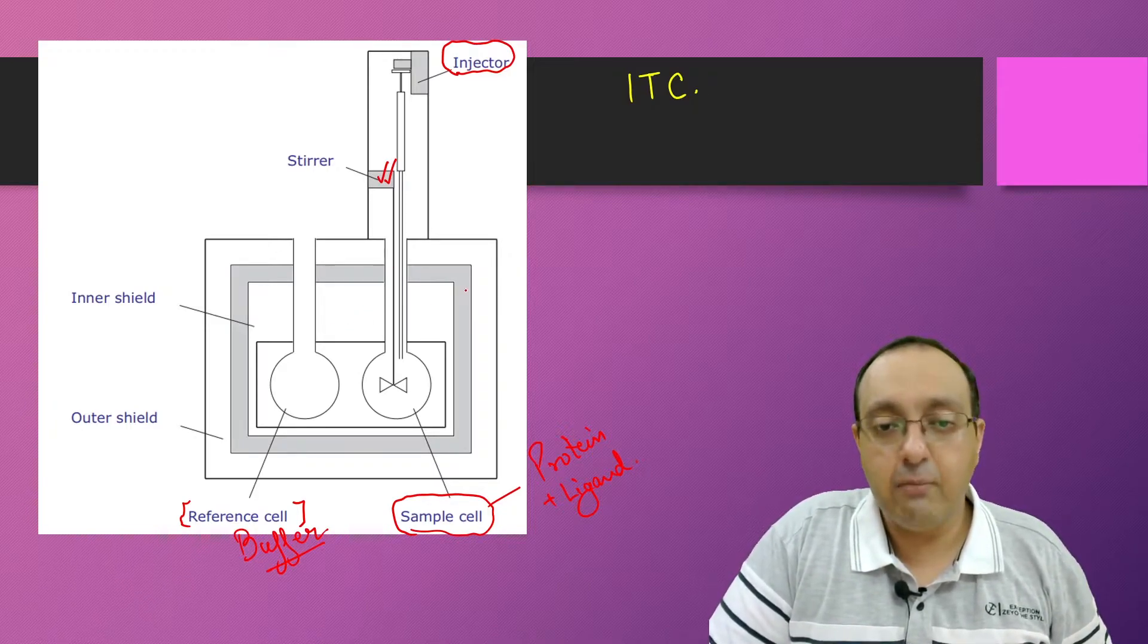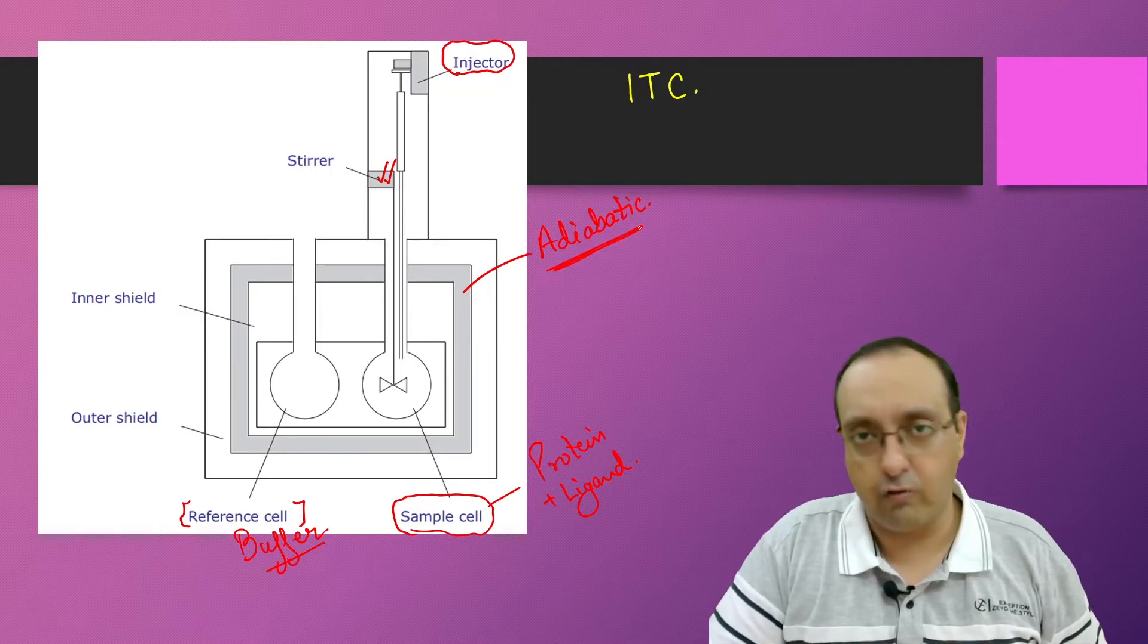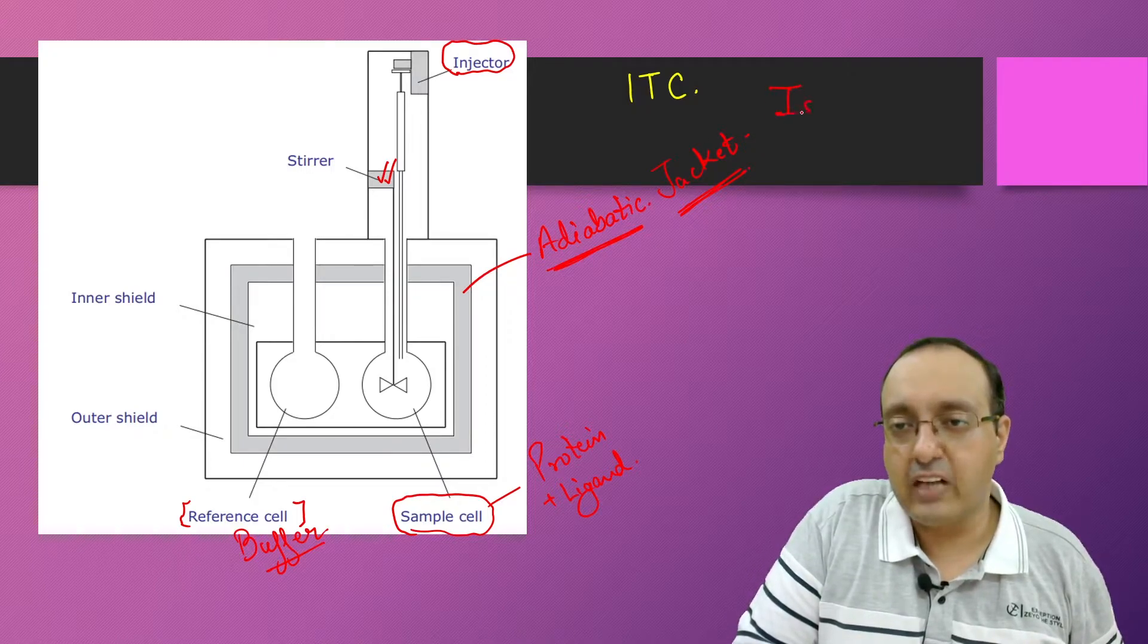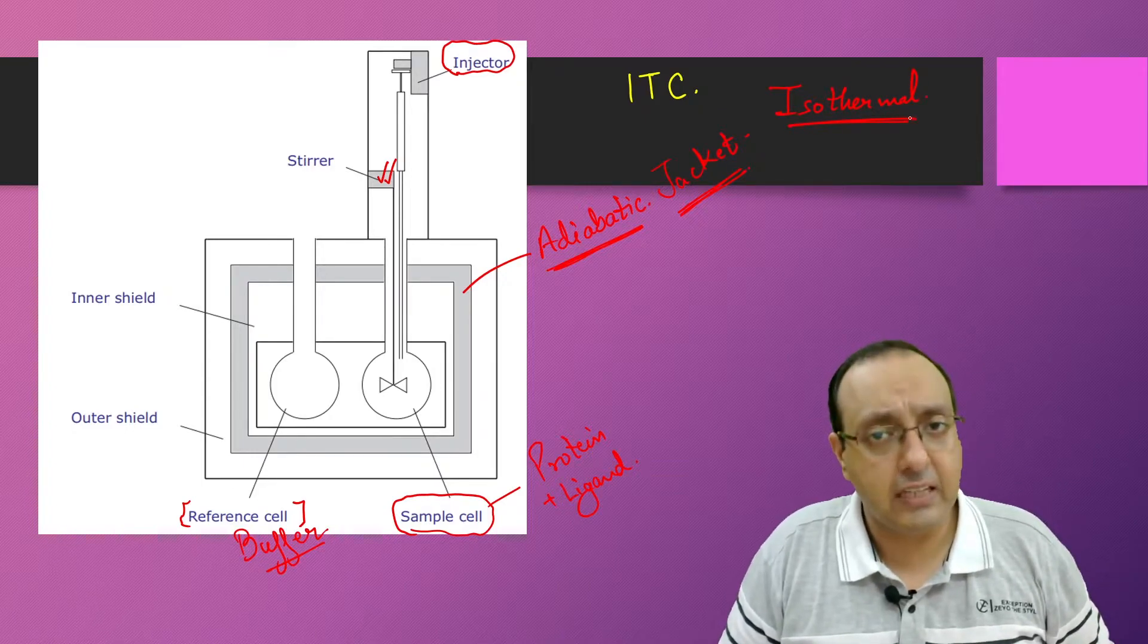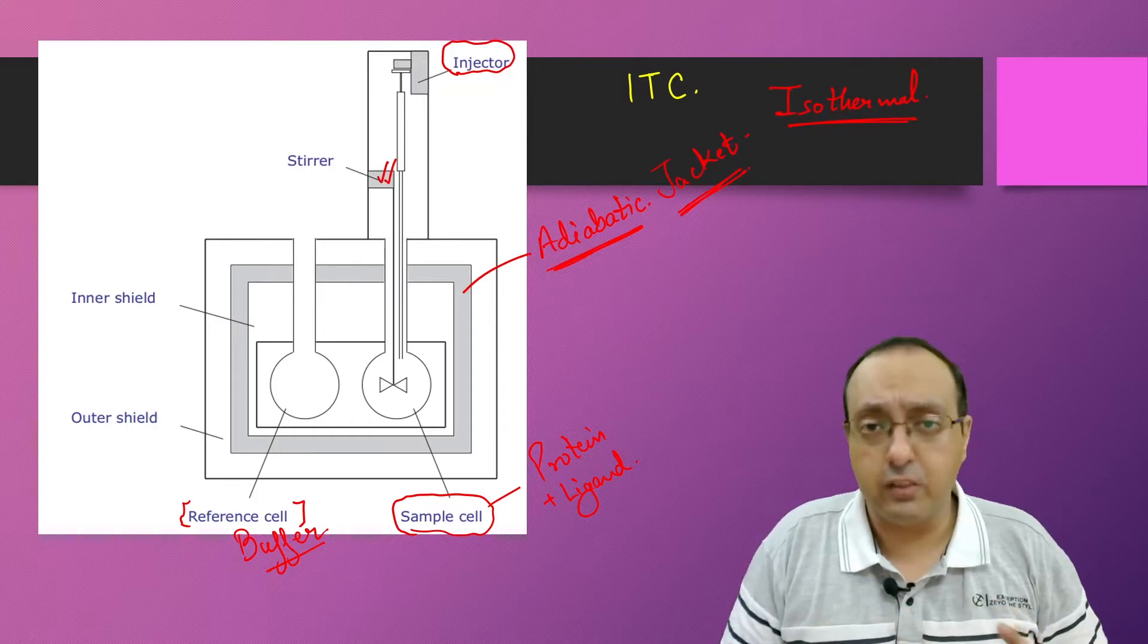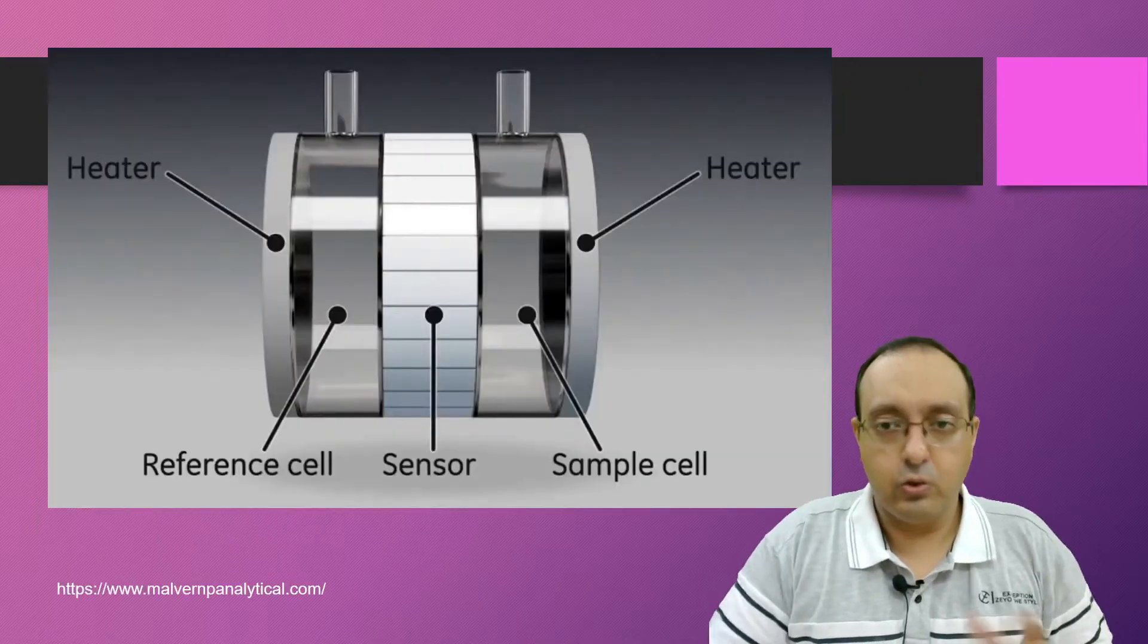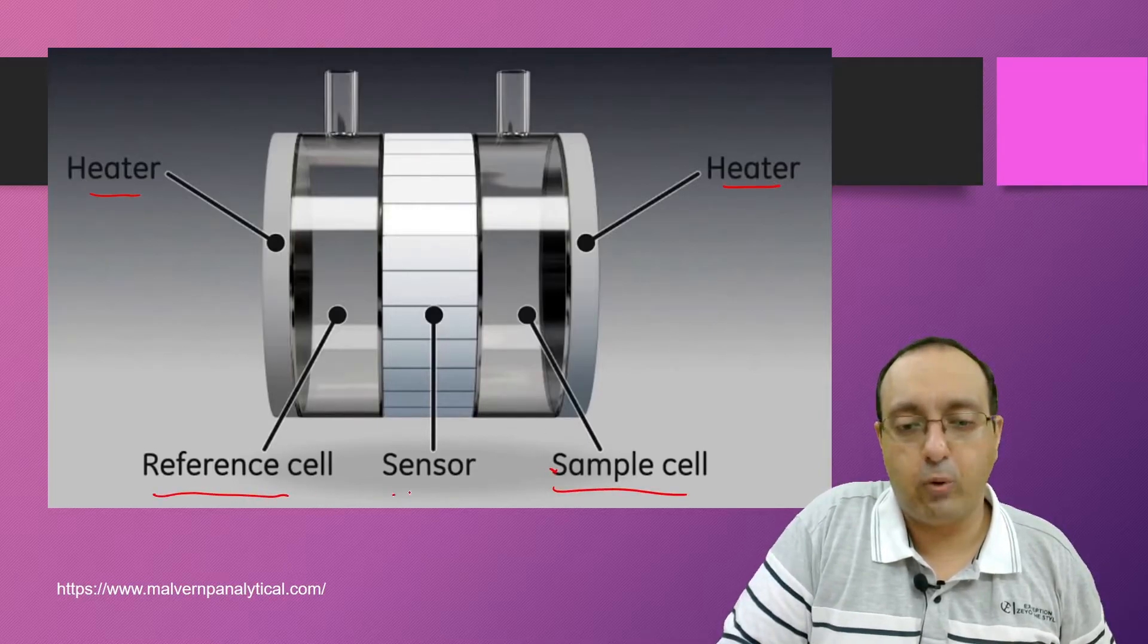These are covered by an adiabatic jacket, so it does not allow any heat exchange from the outside to the inside or vice versa. Highly controlled atmosphere. The name isothermal titration calorimetry refers to this main keyword which is isothermal. The sample cell and reference cells are kept at the same temperature. If there is any temperature difference or heat difference between sample cell and reference cell, which is usually caused by protein-ligand interaction, that is detected by this ITC instrument. Here we have the heaters which maintain the same temperature in the sample cell and the reference cell.